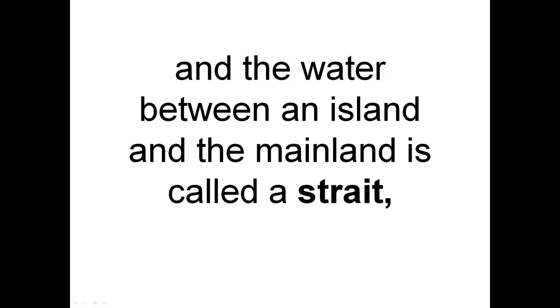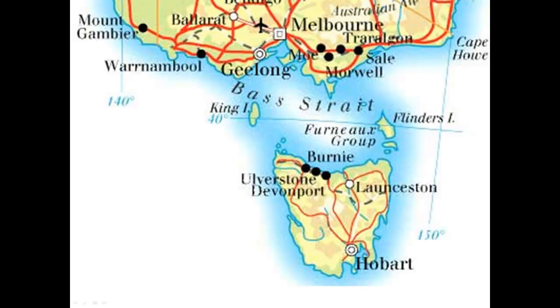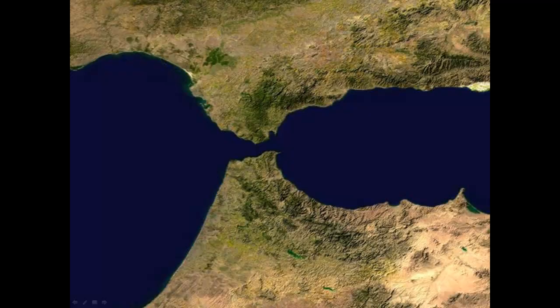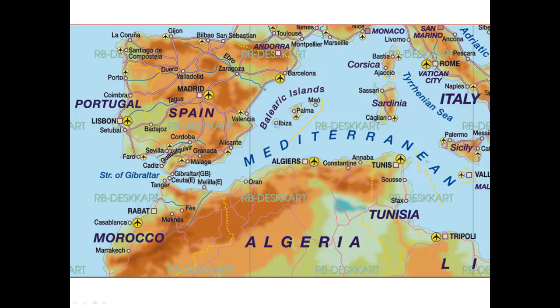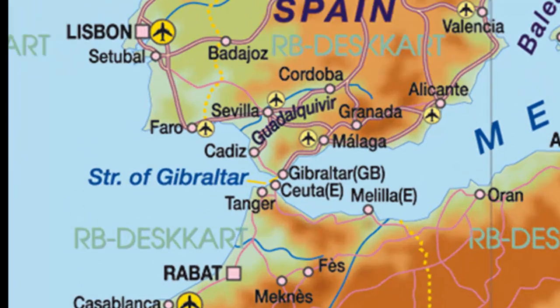The water between an island and the mainland is called a strait. There's Bass Strait, and like the Strait of Gibraltar — can you find the Strait of Gibraltar? It's actually between two continents.